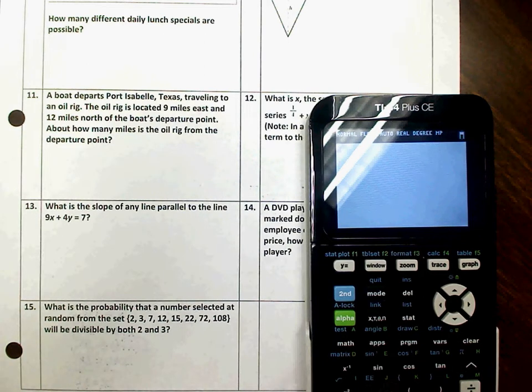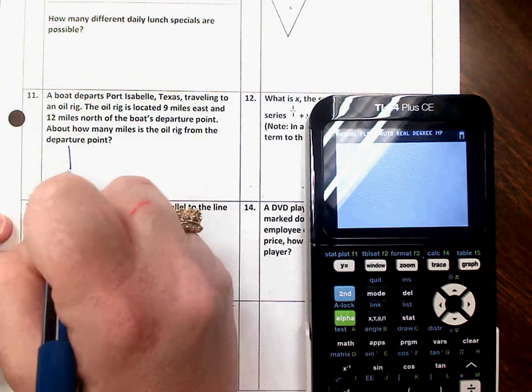Number 11. A boat departs Port Isabel, Texas, traveling to an oil rig. The oil rig is located 9 miles east and 12 miles north of the boat's departure point. About how many miles is the oil rig from the departure point?